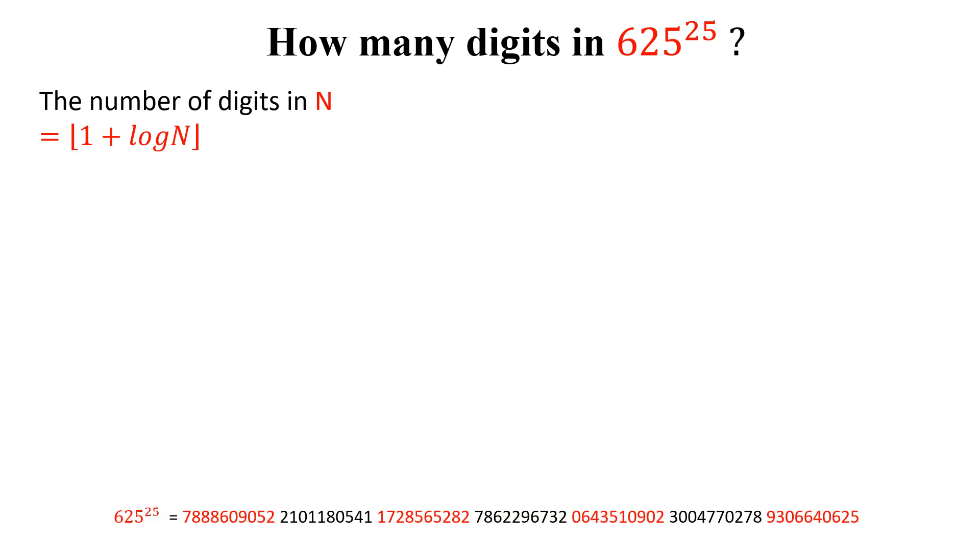Now, let's calculate the number of digits in 625 to the power 25. We know that it is 70. But how can we calculate through this formula? n is the number 625 to the power 25. So, 1 plus log 625 to the power 25 and this floor function. This, we can write 1 plus log 5 to the power 4 whole power 25 and this floor function.